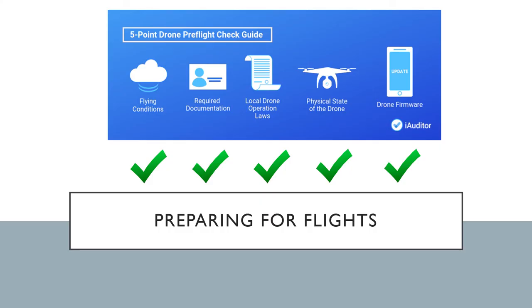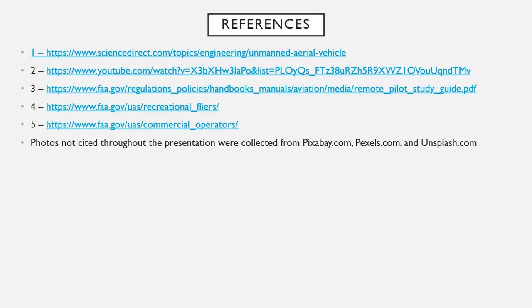We've now completed the whole pre-flight checklist: flying conditions and weather, required documentation, physical equipment inspection, and firmware updates. It's time to fly and complete our mission. A few references used throughout this presentation are listed — especially that YouTube video on the mechanics of flight. If you have any questions, don't hesitate to reach out to Justin or myself. We're always here to help, and I'll see you in Lesson 2.